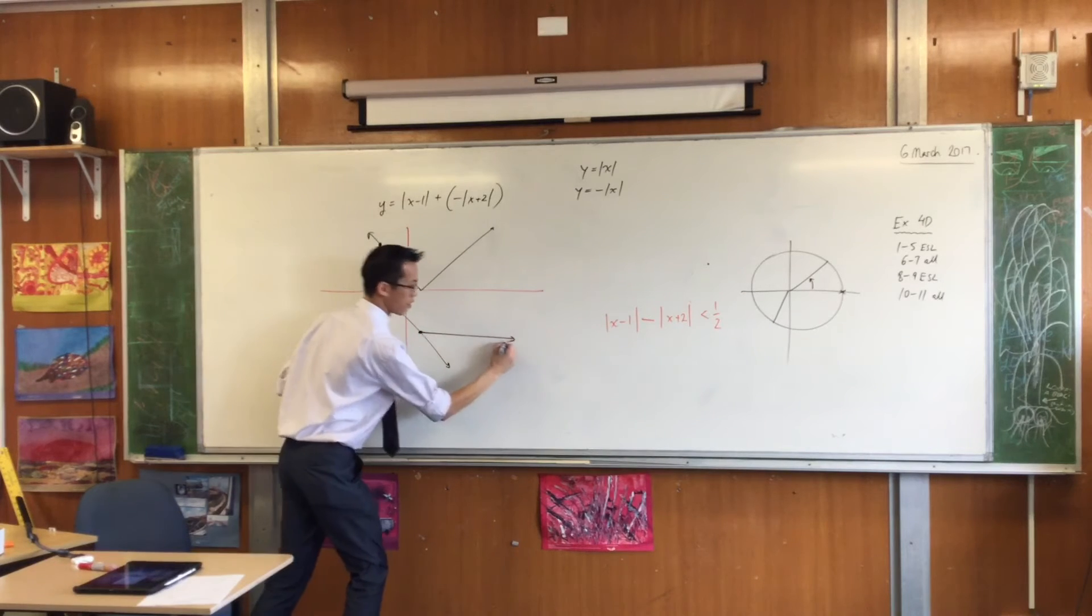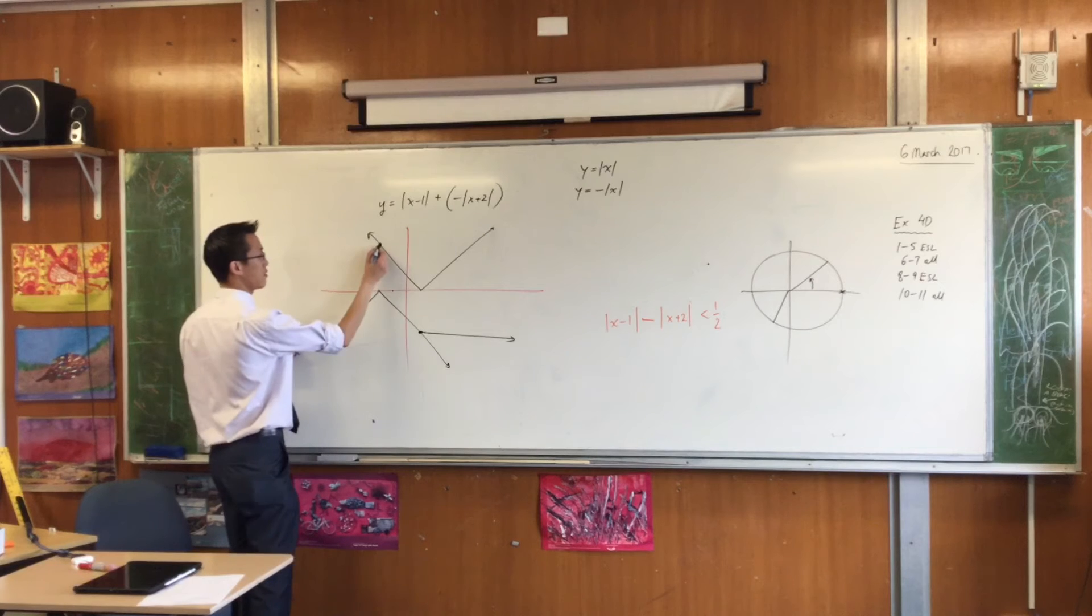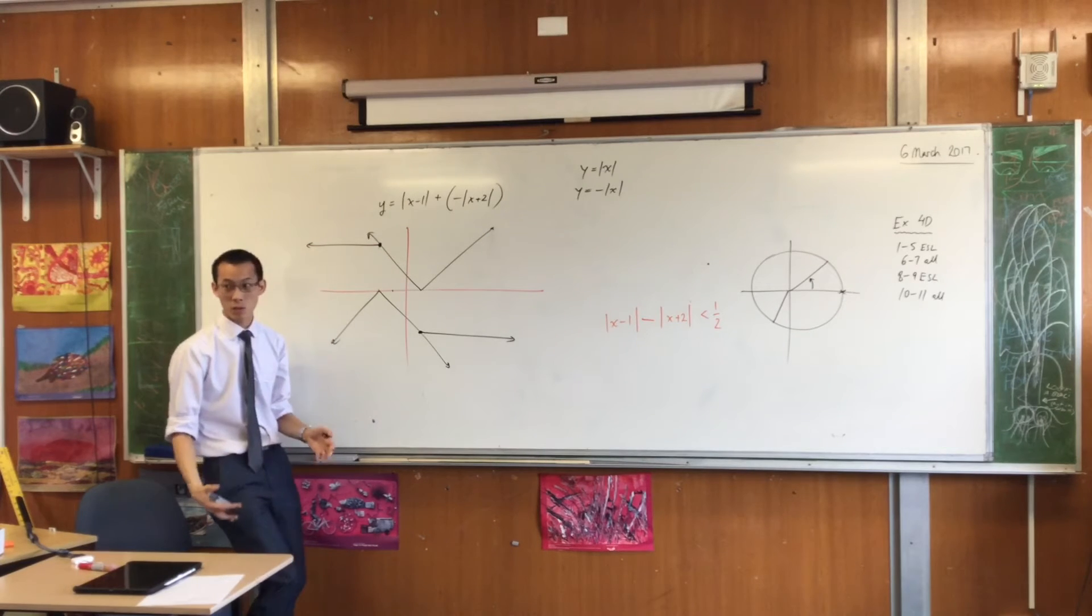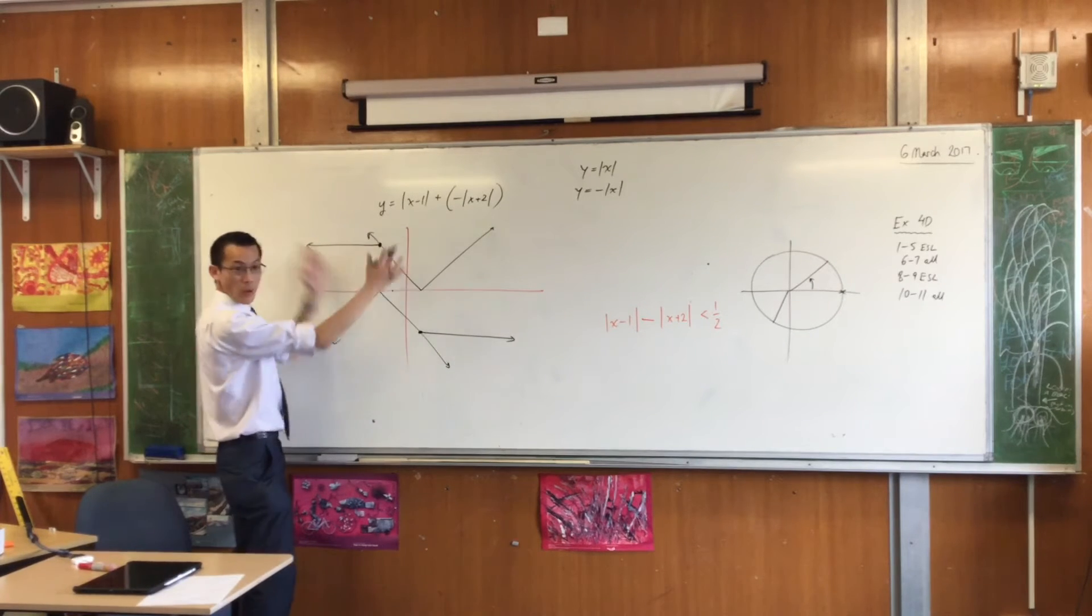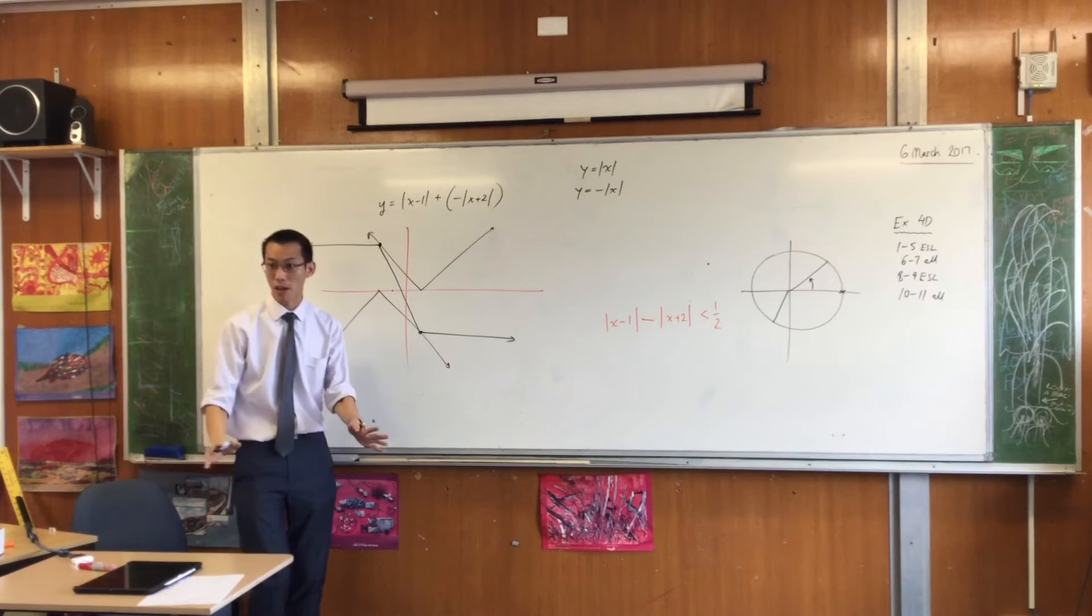So this is just going to be a horizontal line over there. Same thing happens over here for the opposite reason. Horizontal line. And guess what? When you add straight lines, no matter which way they're going, you're going to get more straight lines. I'm done. There's the graph.